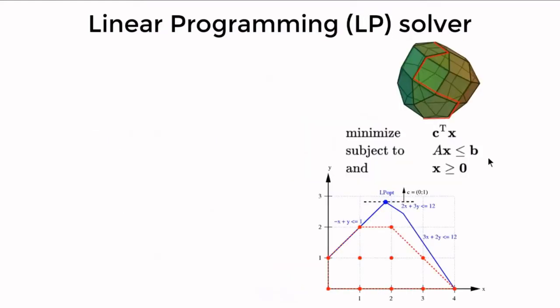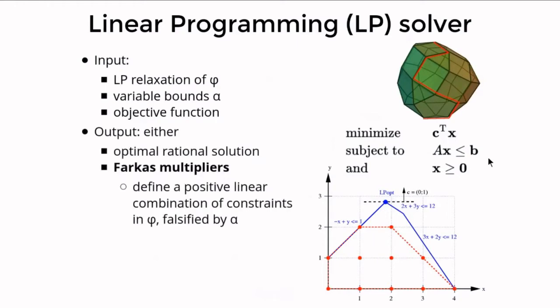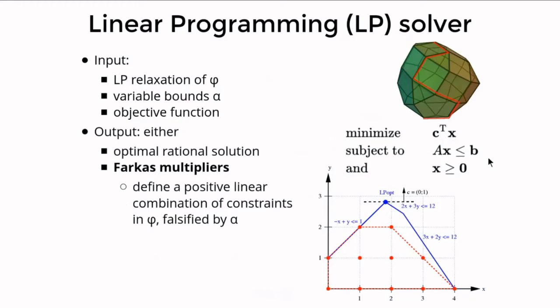An LP solver takes as input the LP relaxation of the constraints, variable bounds representing the partial assignment alpha, and an objective function. It outputs an optimal rational solution, or if no such solution exists, a set of multipliers defining a positive linear combination falsified by the partial assignment. As this combination exists by Farkas's Lemma, we call these the Farkas multipliers, and the resulting constraint the Farkas constraint.